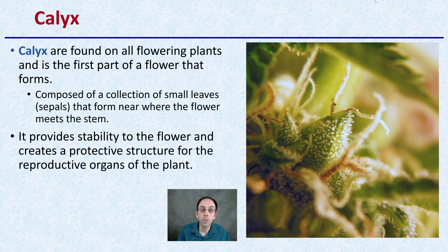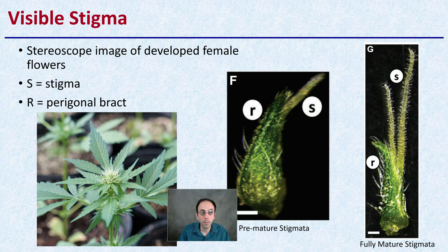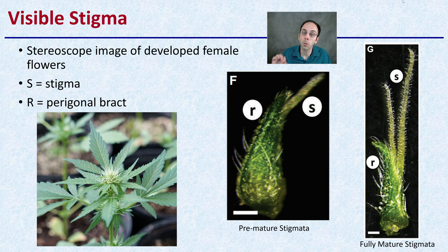We also have the calyx structure. This is found in all flowering plants and is the first part of the flower that forms. It's composed of a collection of small leaves called sepals that form near where the flower meets the stem — we can see that evident right here. It provides stability to the flower and creates a protective structure for the reproductive organs of the plant.